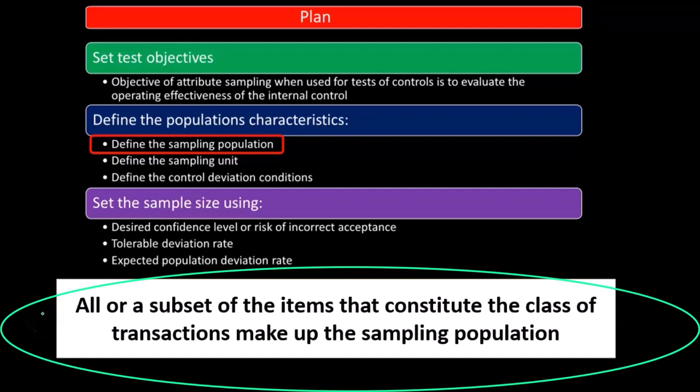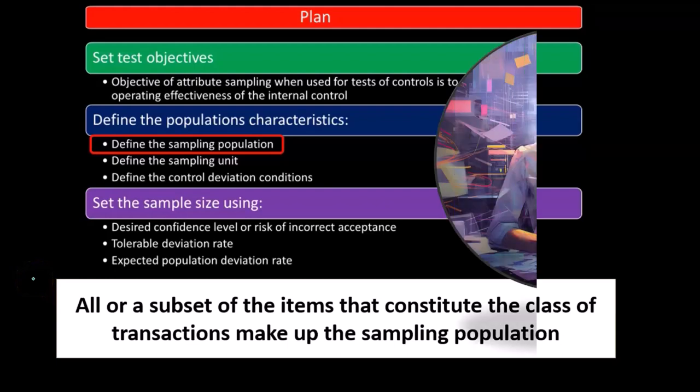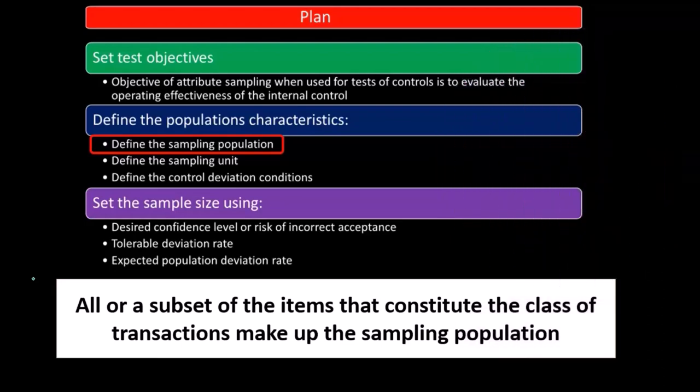So the sampling population is the entire population. For example, if we wanted to test an internal control related to the purchasing process, some type of verification within the purchasing process, we have the purchasing documentation going through. We want to check that there's some type of verification in accordance with the set of controls.